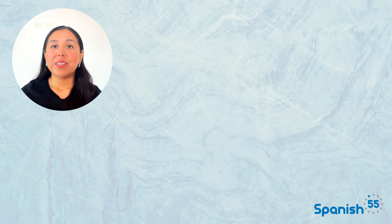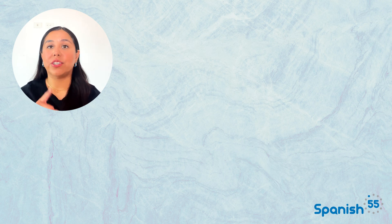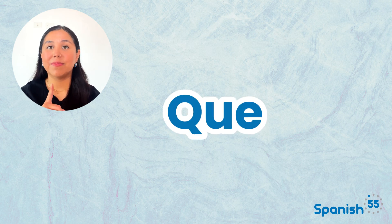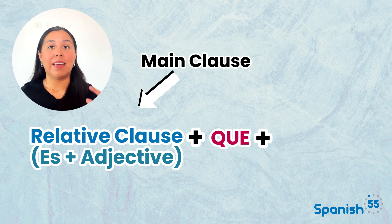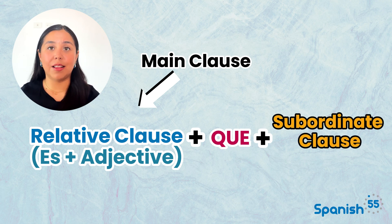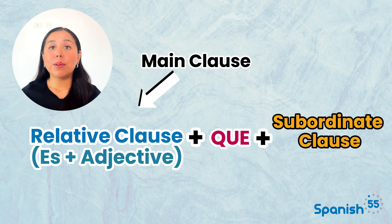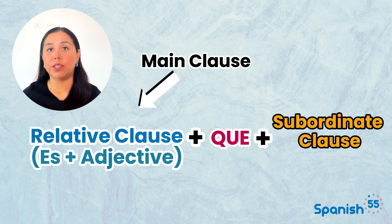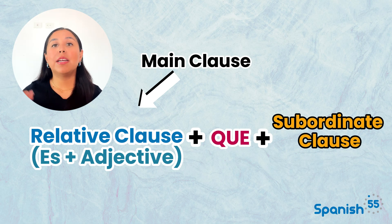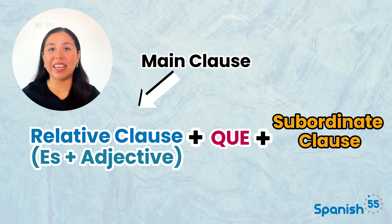We use the subjunctive to convey uncertainty or subjectivity. It is usually triggered by the use of the conjunction que and the change of subject between the main clause and the subordinate clause. If you want to learn more about this or how to conjugate in the present subjunctive, make sure to check out the previous videos in this series. Now, pay close attention to the following sentences.